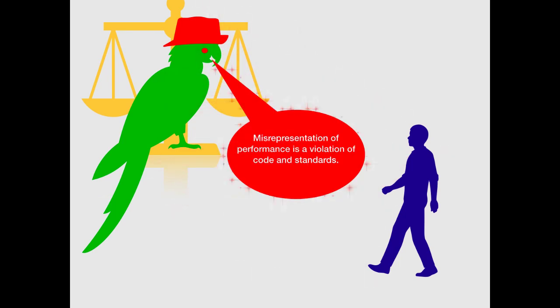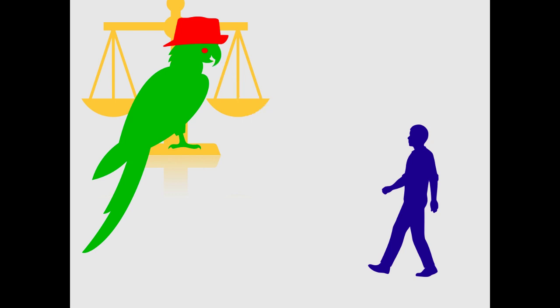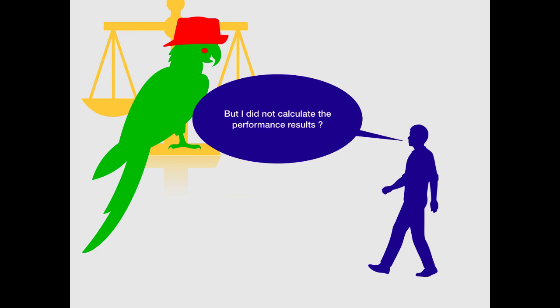So here is what guru has to say. Guru says misrepresentation of performance is a violation of code and standards. So here is what Ross replies. Ross says yes, but I am not the one who has calculated these results.